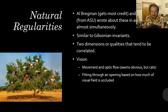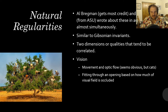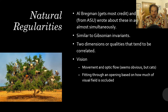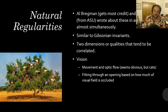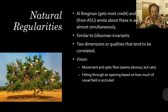Albert Bregman is one of the first people to coin the term natural regularities — he gets most of the credit. But Bill Yost, who teaches here at ASU, wrote about these almost simultaneously, independently arriving at the same ideas. Natural regularities are two qualities that tend to be correlated, and we can think about these with illusions and parts of our daily life.